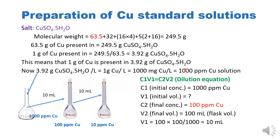Milligrams per liter, milligrams per kg, and ppm are all the same. If we want to prepare a solution of lesser concentration from a higher concentrated solution, we do this dilution using the dilution equation C₁V₁ = C₂V₂, where C₁ is the initial concentration and V₁ is the initial volume of the solution, and C₂ is the final concentration we need to prepare.